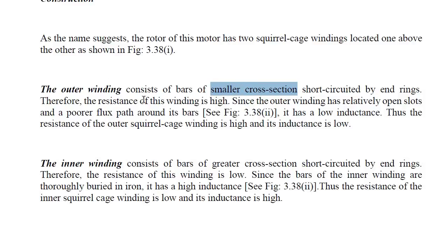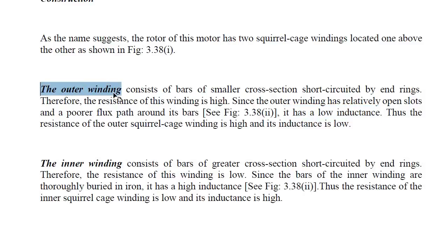Since the outer winding has relatively open slots and a poorer flux path around its bars, it has low inductance. The outer cage bars are placed in open slots, which results in a poor flux path and therefore low inductance. So the outer winding has high resistance and low inductance.